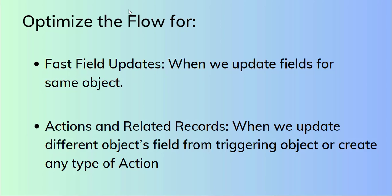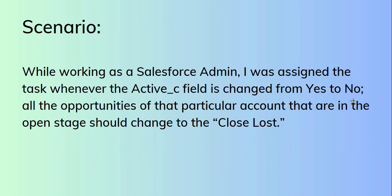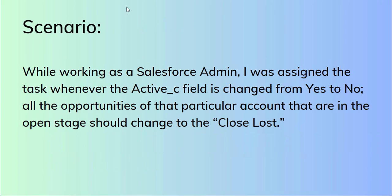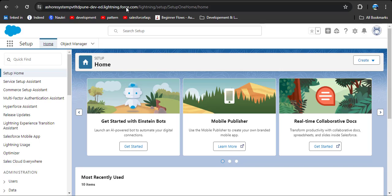Now we will see how to use the action and related records option. Here is a real scenario: while working as a Salesforce admin, I was assigned a task where whenever the active field is changed from yes to no — the active field is a custom field — all opportunities of that particular account that are in an open stage should be changed to Closed Lost.